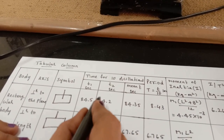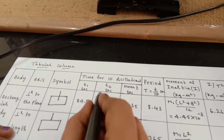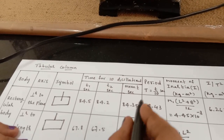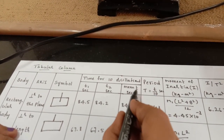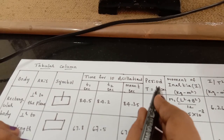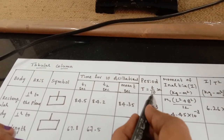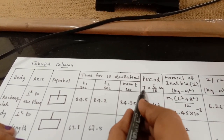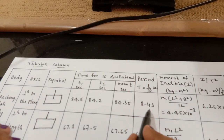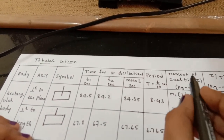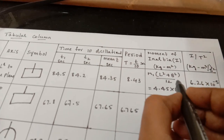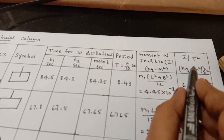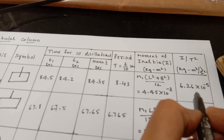Repeat the experiment for a second trial. You will get T₁ and T₂; take the mean value to get T. This T is the time for 10 oscillations. The period (time for one oscillation) is capital T = T/10. Once you know the period and the moment of inertia I, you can calculate I/T² and tabulate the values.